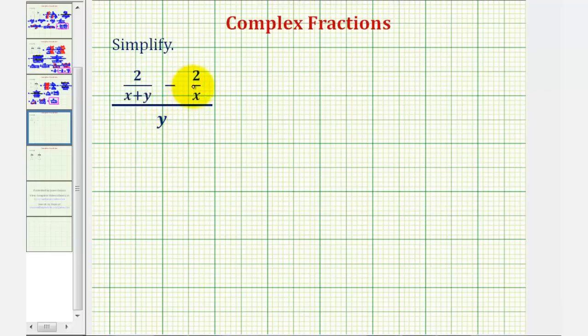But for the first step, we want to find this difference, so we must find a common denominator. Our first denominator is the quantity x plus y, and the second denominator is just x. So the least common denominator would be the product of these two, or x times the quantity x plus y.